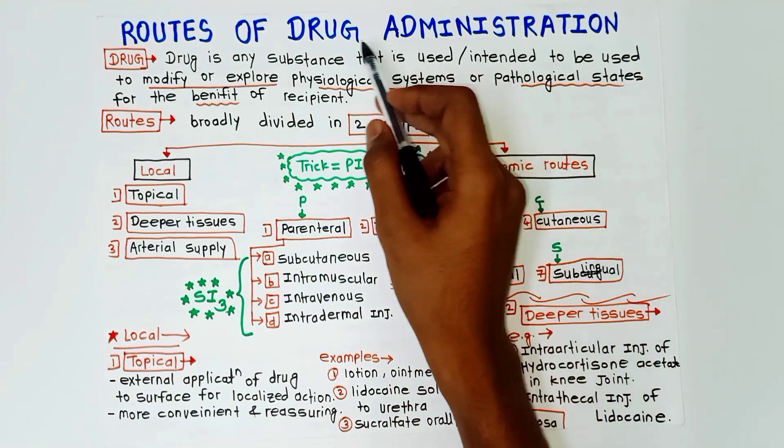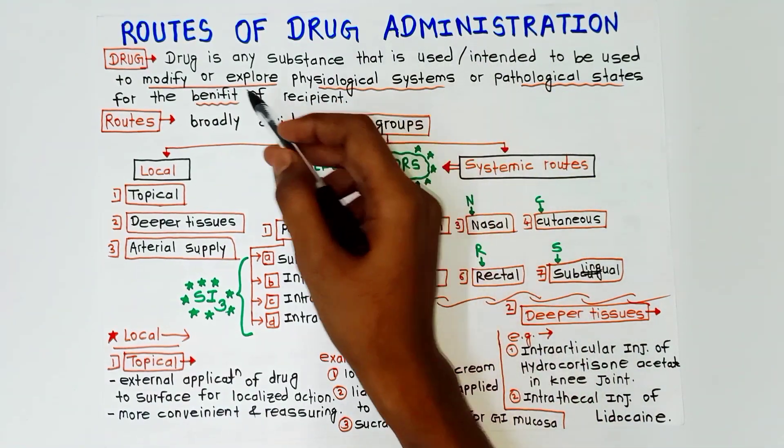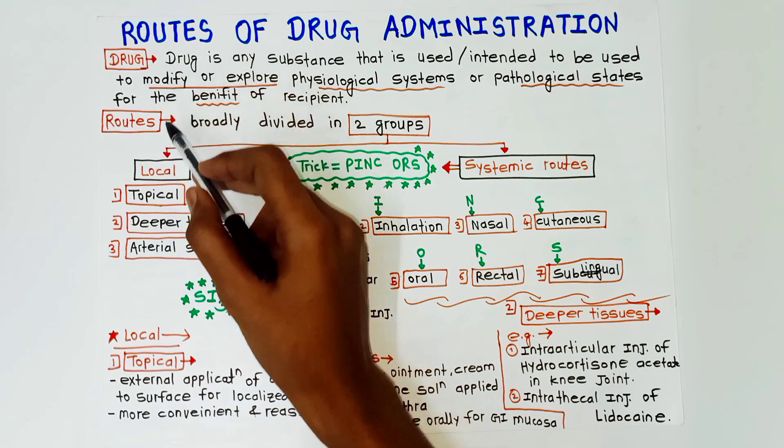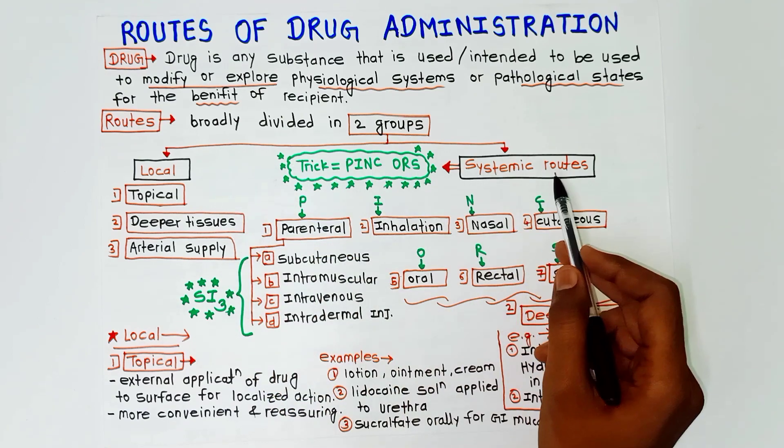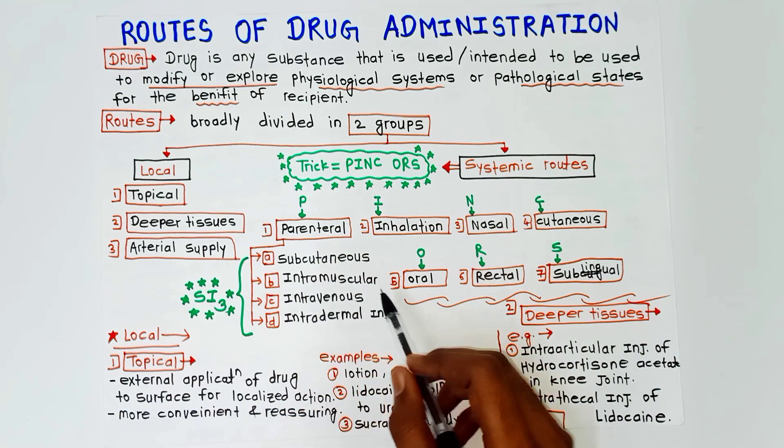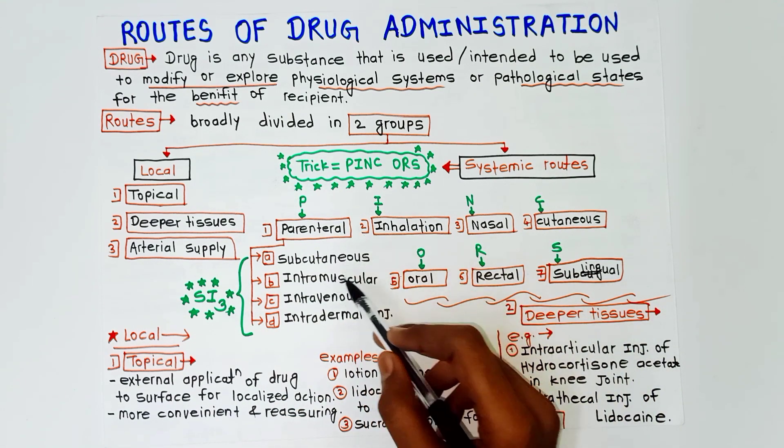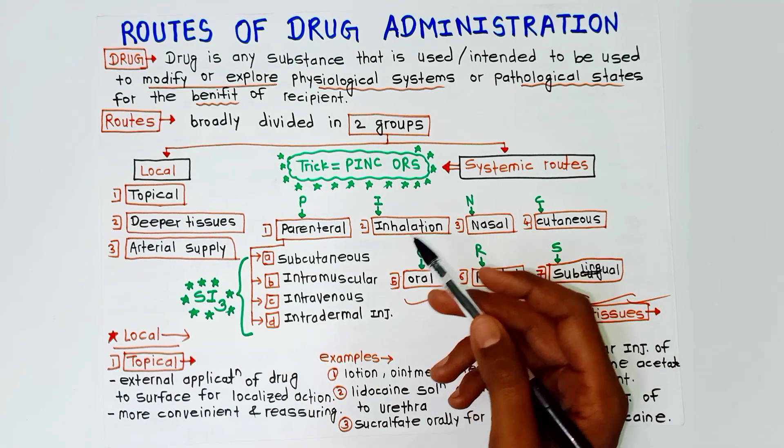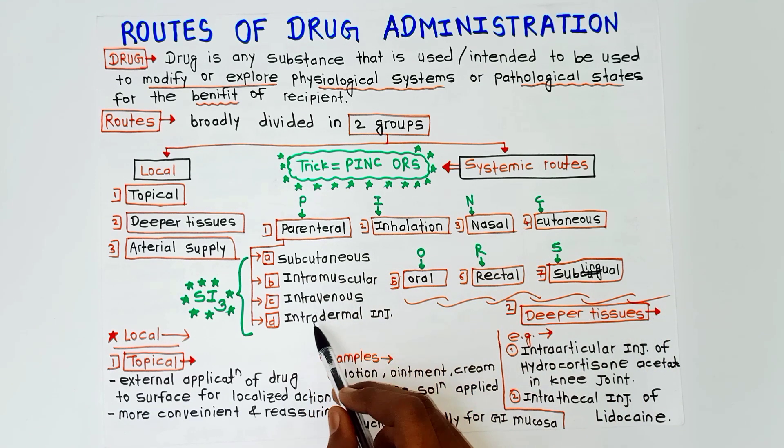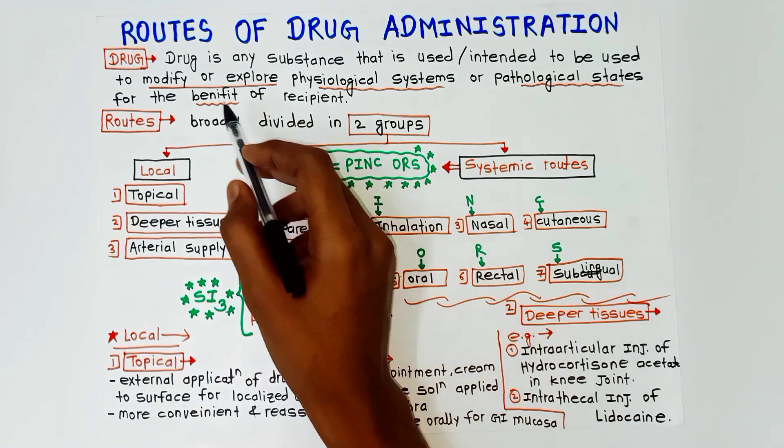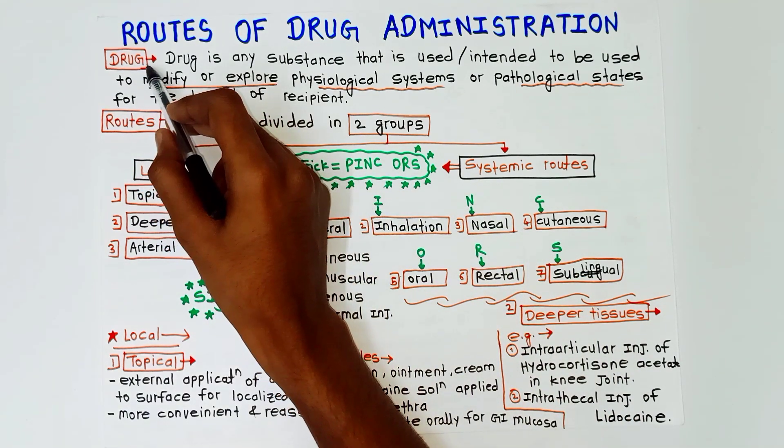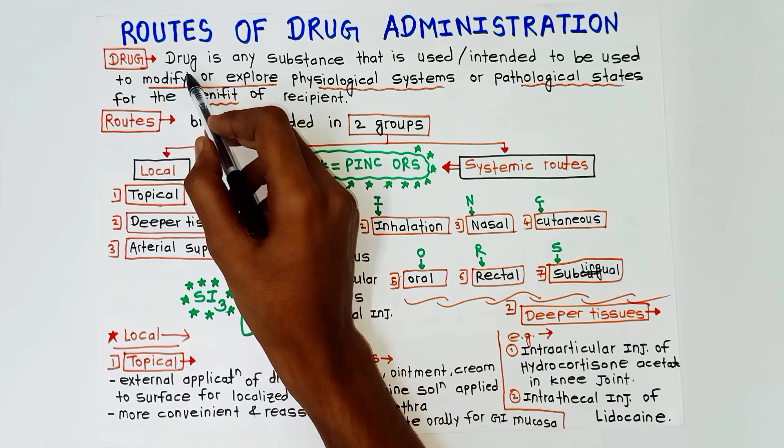The questions asked regarding this topic in your exam will cover the definition of drug, the various routes of drug administration - that is local and systemic routes - with two examples of each route. After that, they will ask you any intravenous or subcutaneous route in detail.